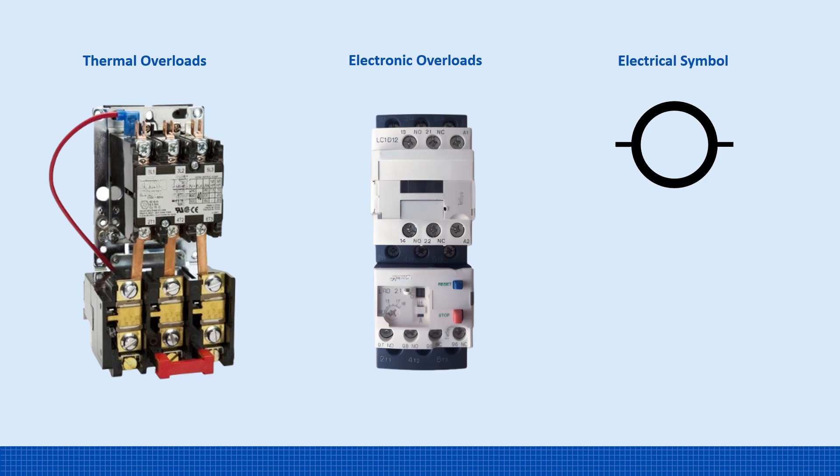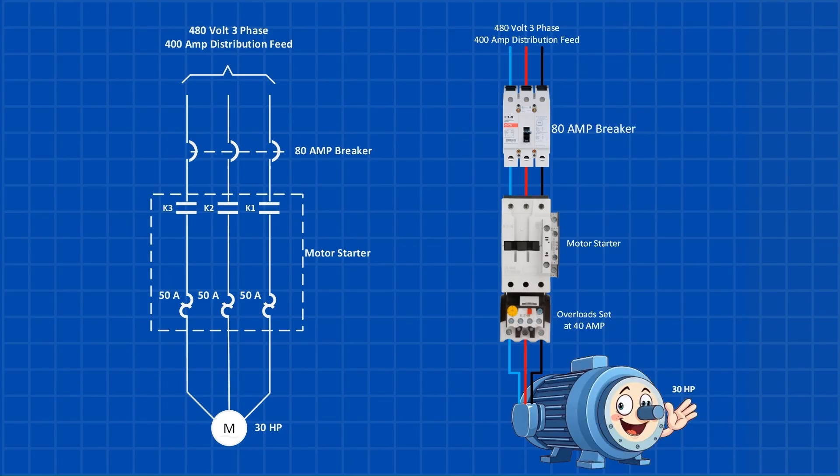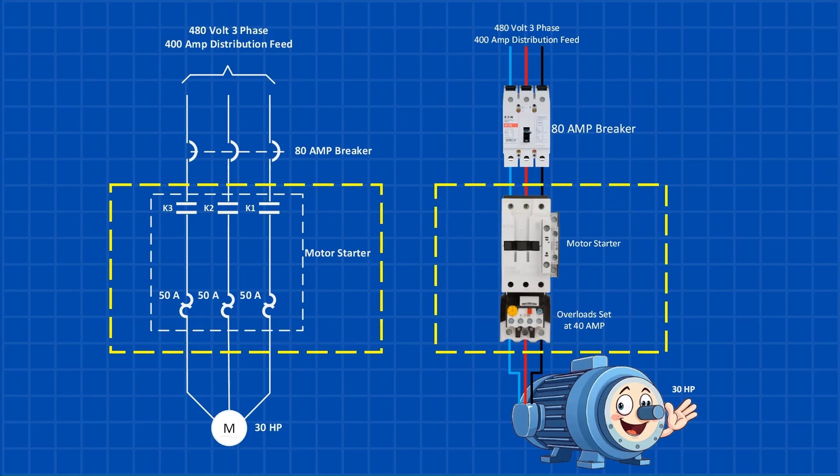So what exactly is a motor starter? A motor starter is simply a contactor with an overload protection device attached to it. There are two main types of starters: those with thermal overloads and those with electronic overloads. To start a three-phase motor, all three phases need to be powered simultaneously, and that's where a motor starter comes into play. It has three contacts that close at the same time to send power to the motor. The motor starter also includes overload protection. If the motor draws too much current beyond the set limit, the overload protection trips, cutting off power to prevent motor damage.